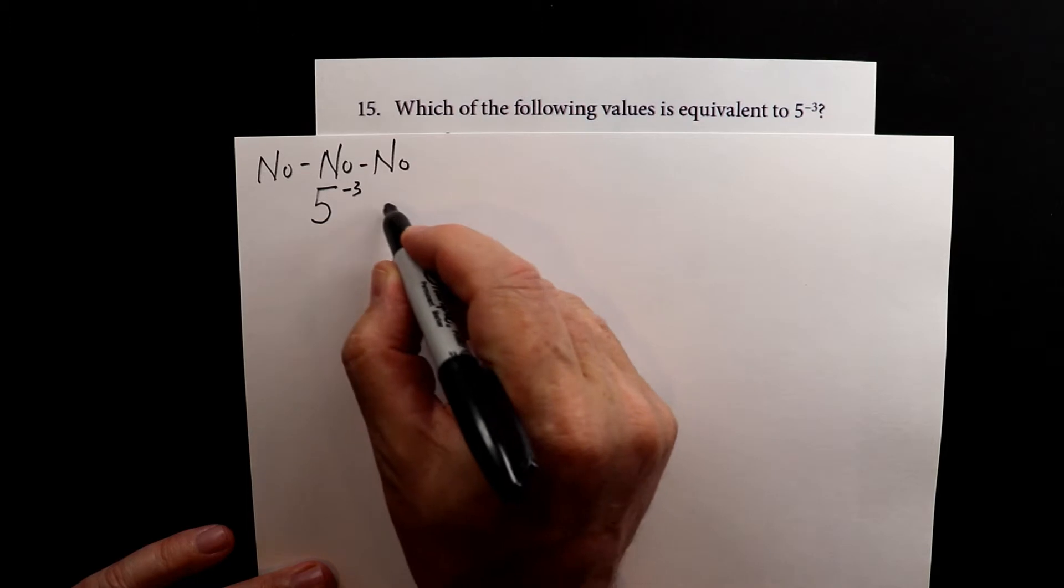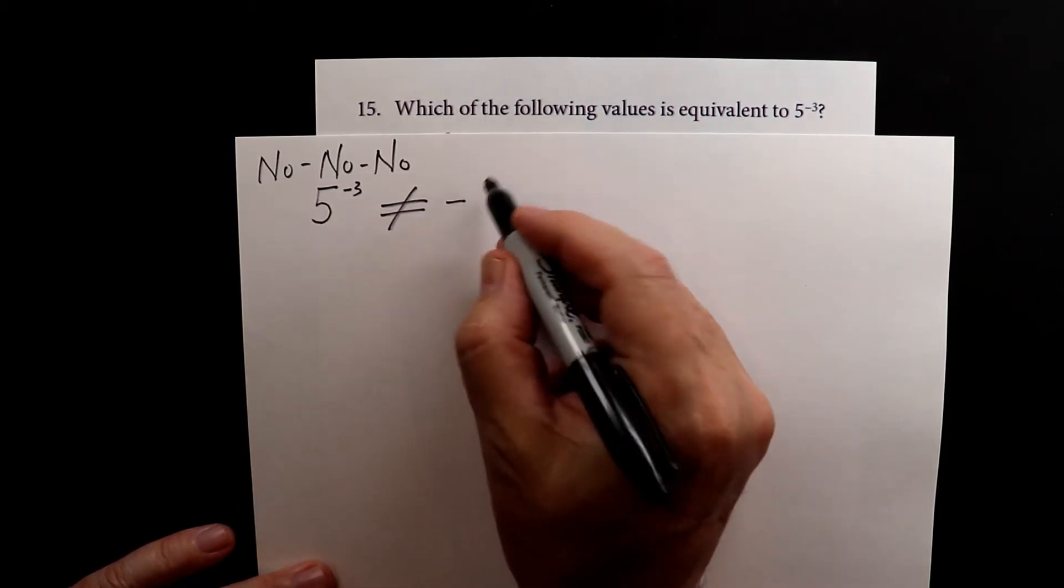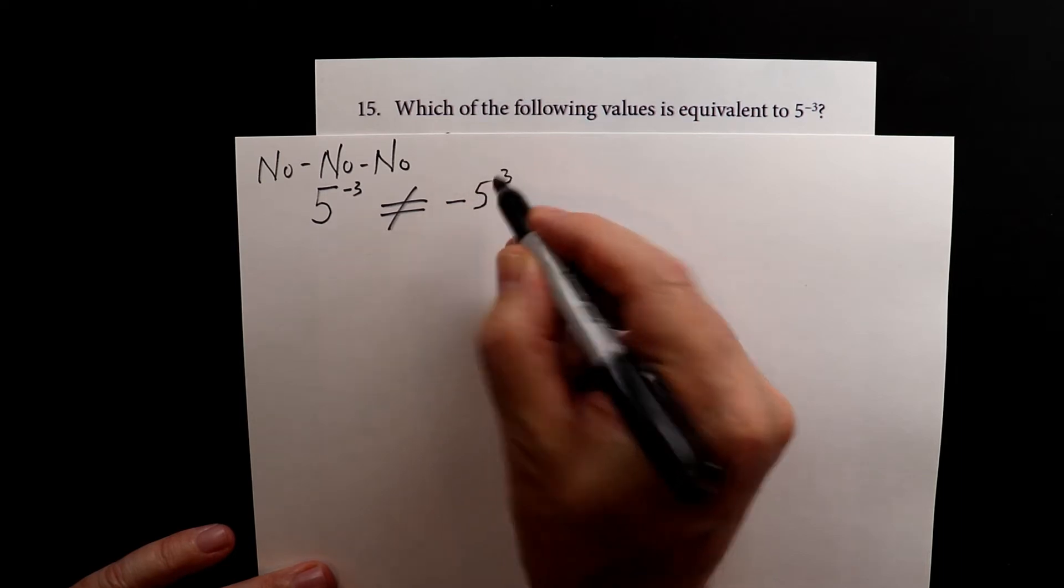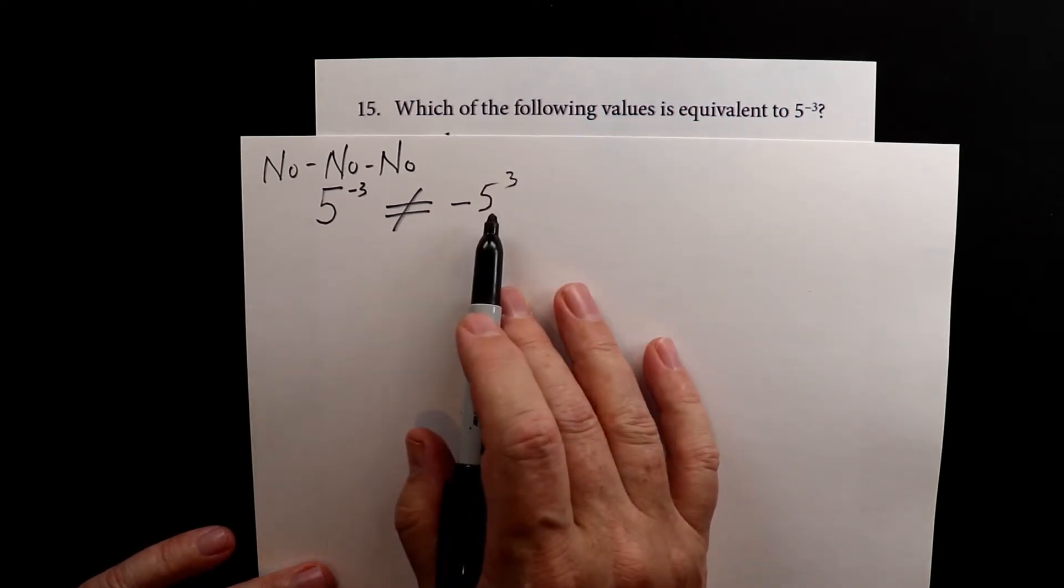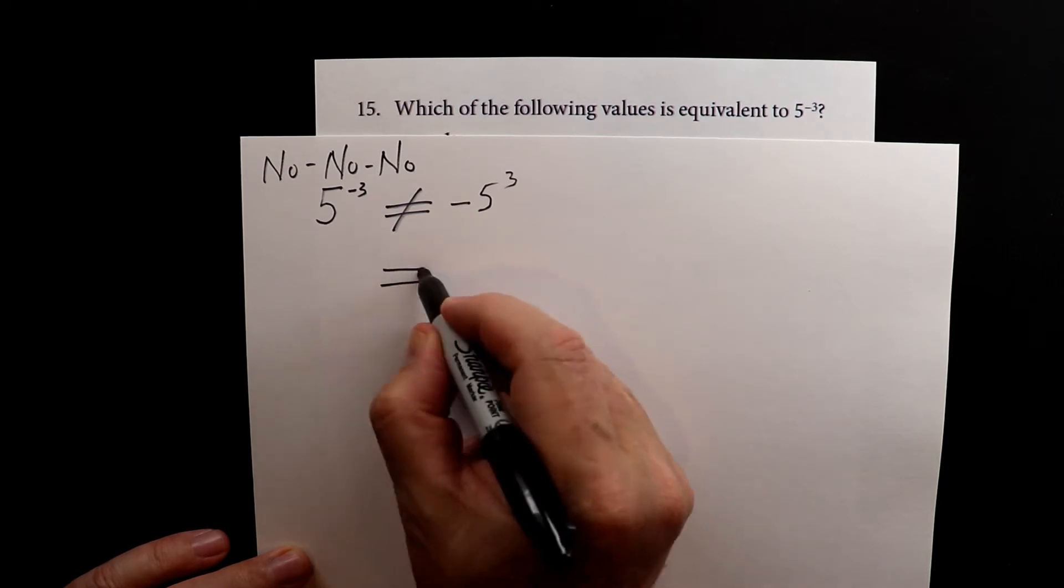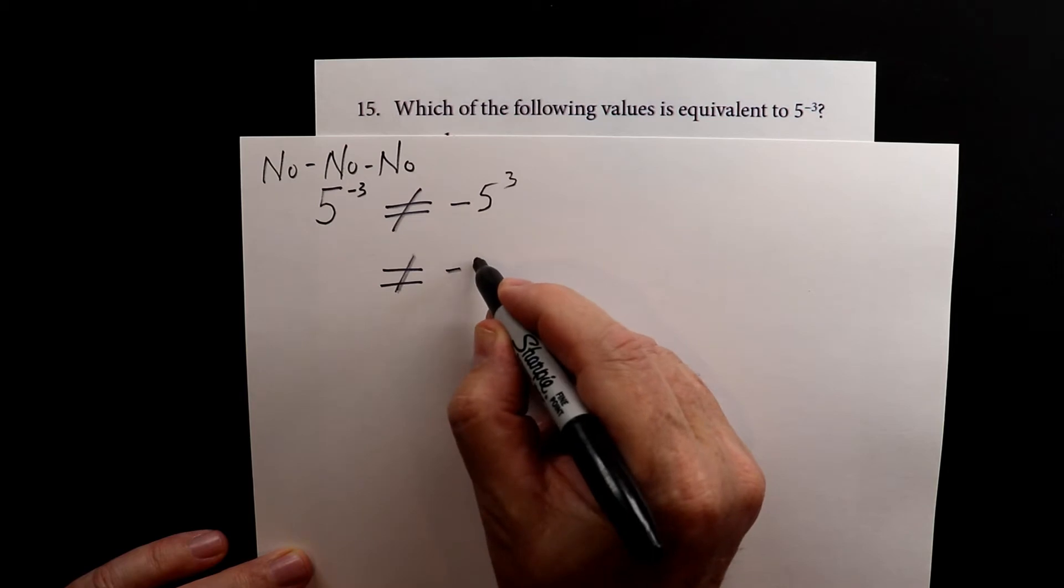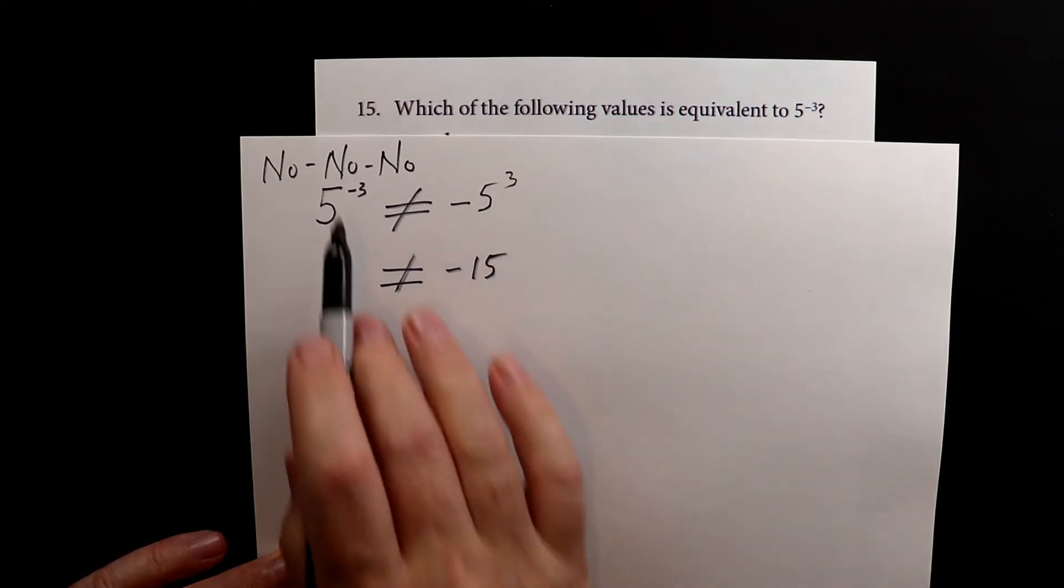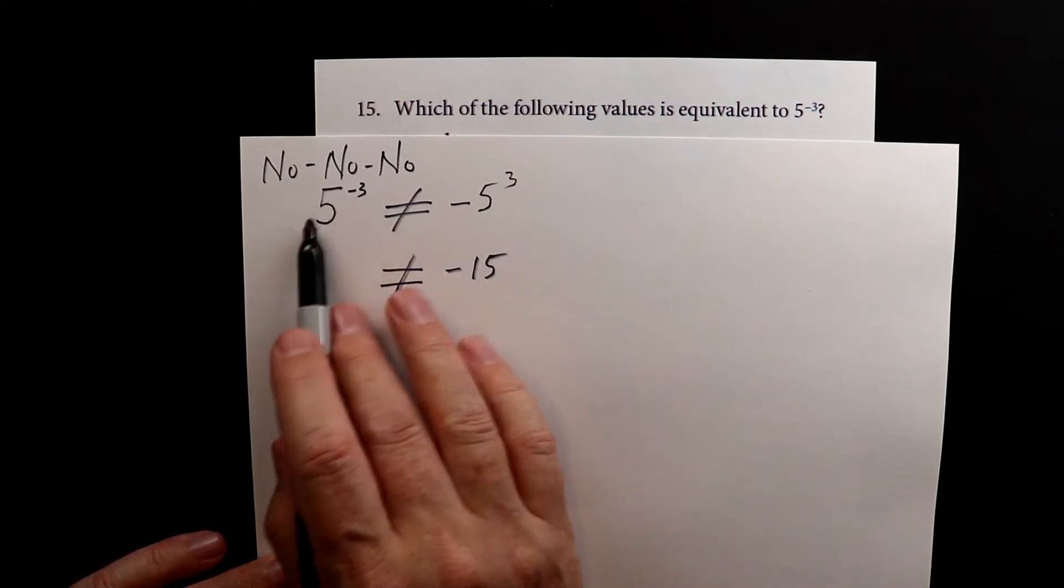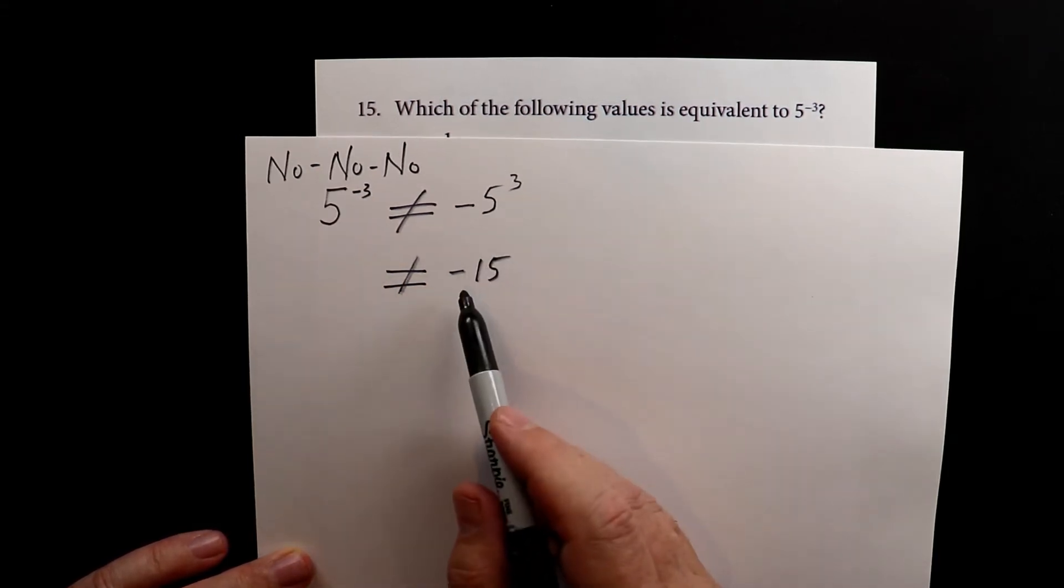This is all wrong. 5 to the negative third does not equal negative 5 to the third. It also does not equal negative 15. Lots of times people see that and they just multiply them. I don't know why, but these are definitely the wrong answers. Don't do that.